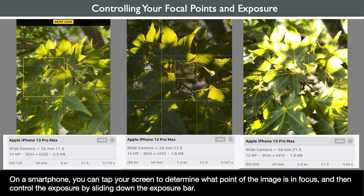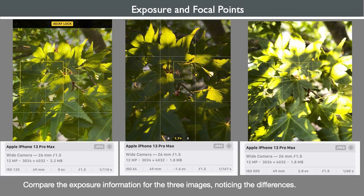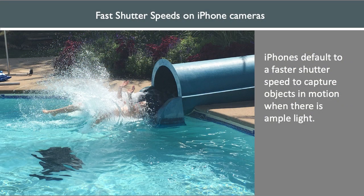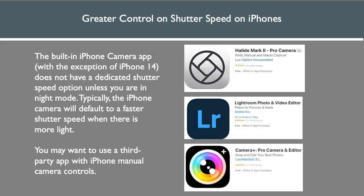Tap and press to lock the exposure, indicated as AE, and autofocus, indicated as AF. To decrease the exposure, tap, hold, and drag the exposure slider down. To increase the exposure, tap, hold, and drag the exposure slider up. Compare the exposure information for these three images, noticing the differences. The iPhone changes not only the ISO but the exposure value overall, adjusting the f-stop and shutter speed. iPhones default to a faster shutter speed when there's ample light, and the built-in camera app does not have a shutter speed option unless you're in night mode. You will need a third-party app for manual camera control to modify ISO and shutter speed, such as Halide Mark II Pro Camera, Lightroom Photo and Video Editor, or Camera Plus Pro Camera and Editor.